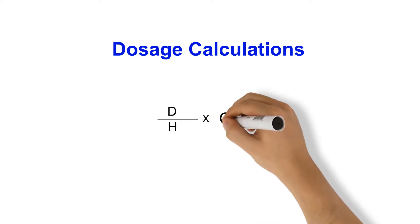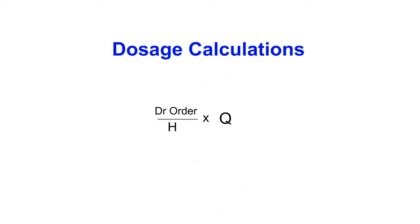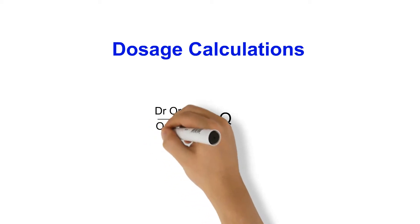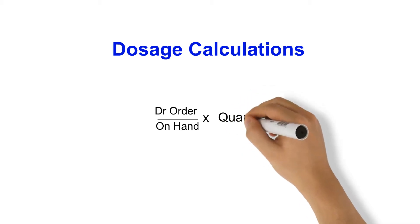And the formula we're going to be using is going to be D over H times Q. So that is doctor's orders or desired amounts over what's available on hand times quantity, which is going to be pill, tablets, MLs, and that's going to equal to the amount that you give.